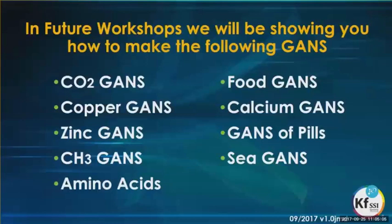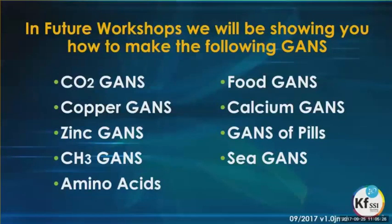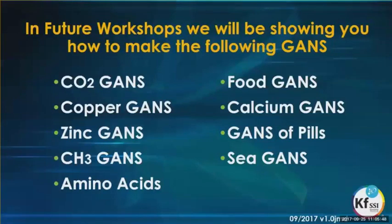In future workshops we will be showing you how to make your CO2, copper, zinc, and CH3 — your four main GANS types — and how to collect your amino acids. In the health sections we'll be showing you creating food GANSes, calcium GANSes, and GANS circles. You'll be able to create all this material yourself on your kitchen table or in your garage, and use it in various ways for health, agriculture, and energy.